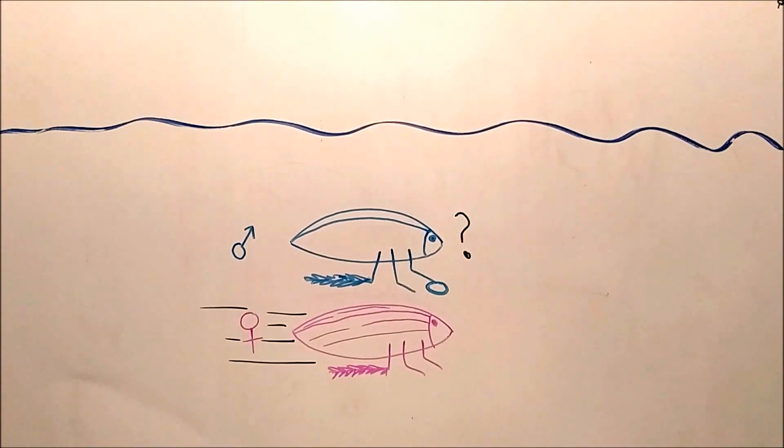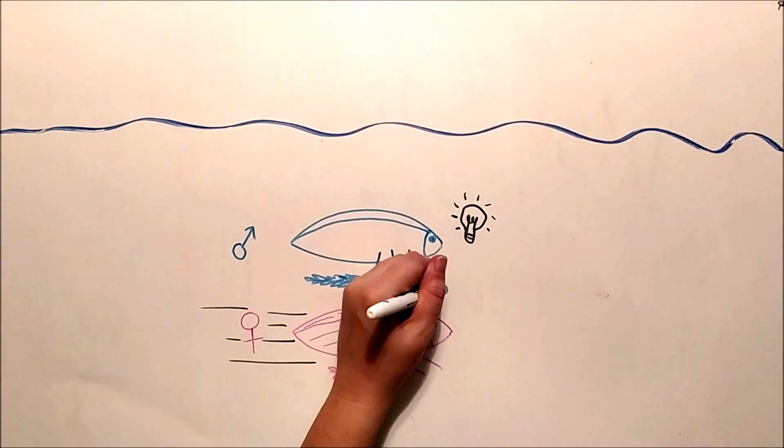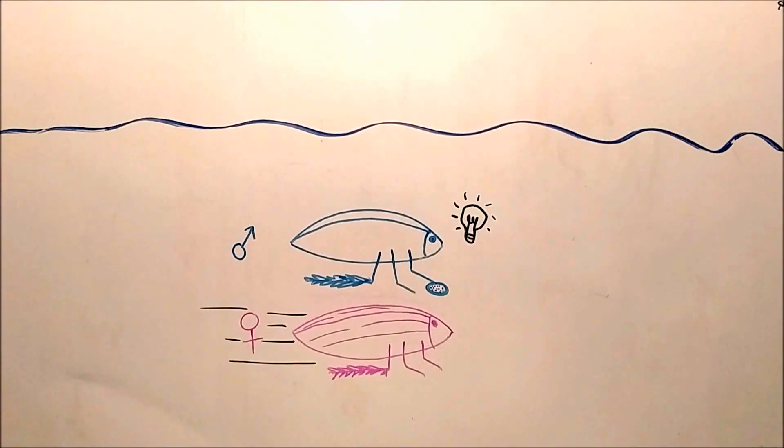But the males still aren't done fighting back. They have developed miniature suction pads at the same distance as the female's grooves. When you look at the grooves on the female's back and compare it to the male's suction cups of the same species, they will match.